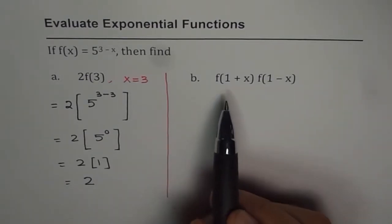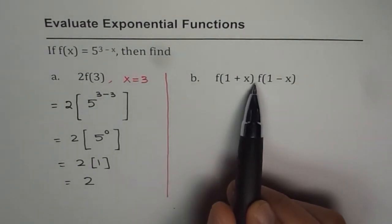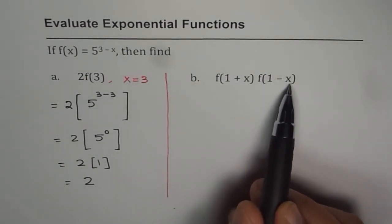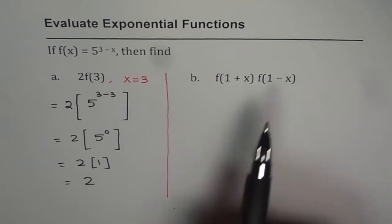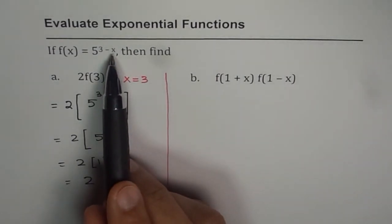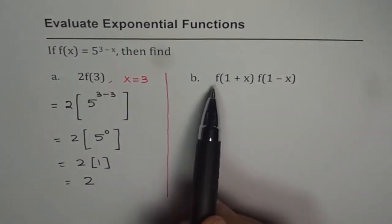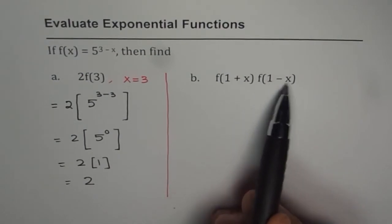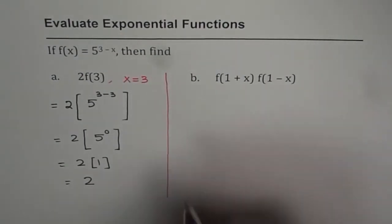In part B, we have f(1 + x) times f(1 - x). So that really means that we will substitute instead of x, 1 plus x, get the first part and then we will substitute 1 minus x and get the next part. So let us do that.